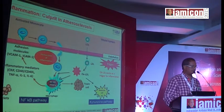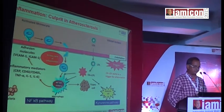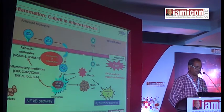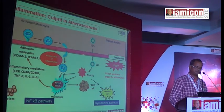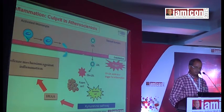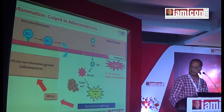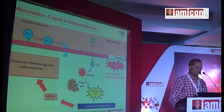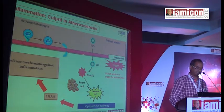VCAM and ICAM cause further adhesion of monocytes and their migration into the intima, leading to stimulation of macrophages and further release of inflammatory mediators. The kynurine pathway works with stimulation of tryptophan, of which 3-HAA is one of the metabolites that helps in the defense mechanism against inflammation.